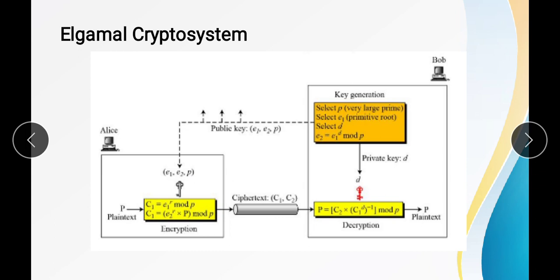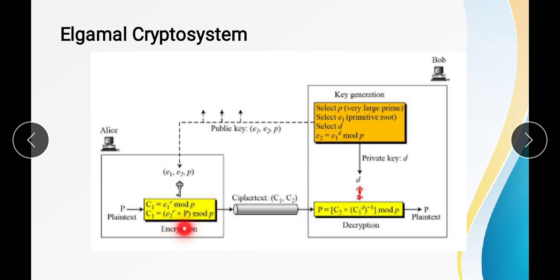After encryption using this key, the sender generates ciphertext c1 and c2. The formulas are: c1 = e1 raised to r mod p, and c2 = (e2 raised to r mod p) multiplied by the plaintext, mod p. These two formulas are used to generate the ciphertext.